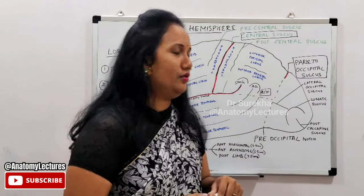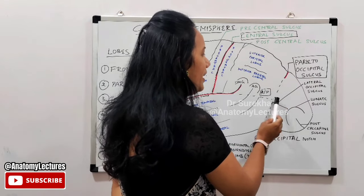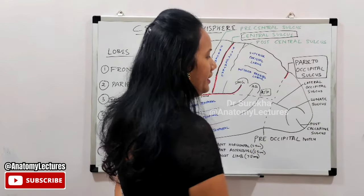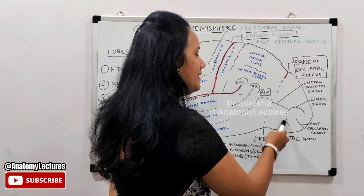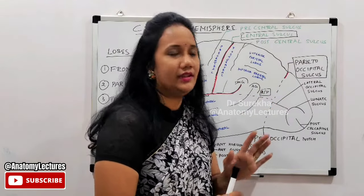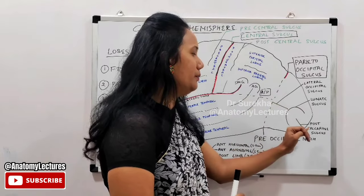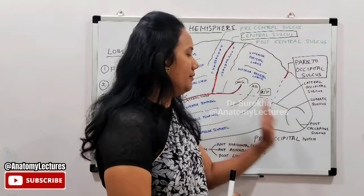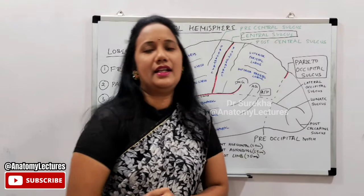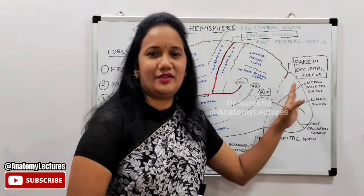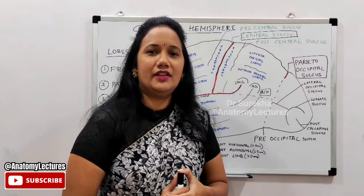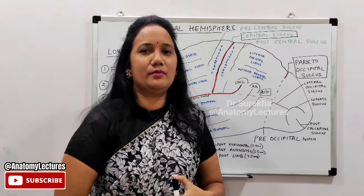The occipital lobe is divisible by the lateral occipital sulcus into a superior occipital lobule and an inferior occipital lobule. A C-shaped lunate sulcus is also visible, and the calcarine sulcus from the medial side cuts through the superolateral surface presenting as the post-calcarine sulcus. The occipital lobe is mainly related to vision, with the visual cortex located here. In the next video, we will look at the different functional areas of the superolateral surface.